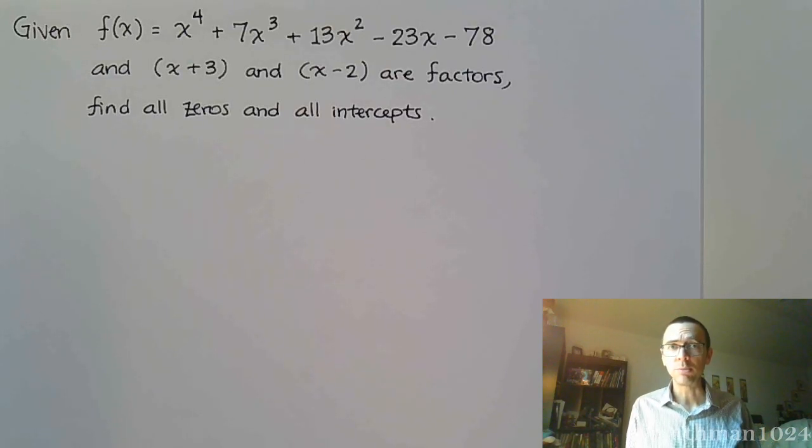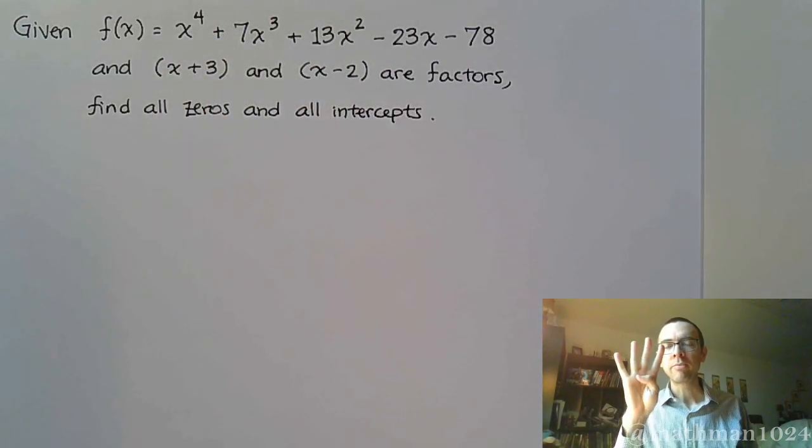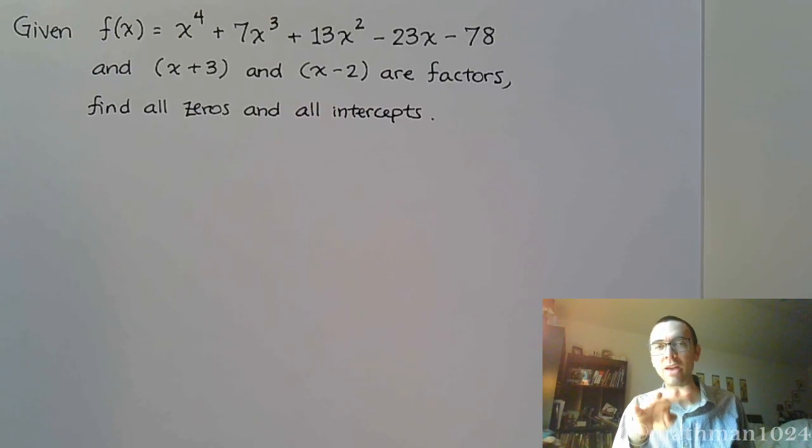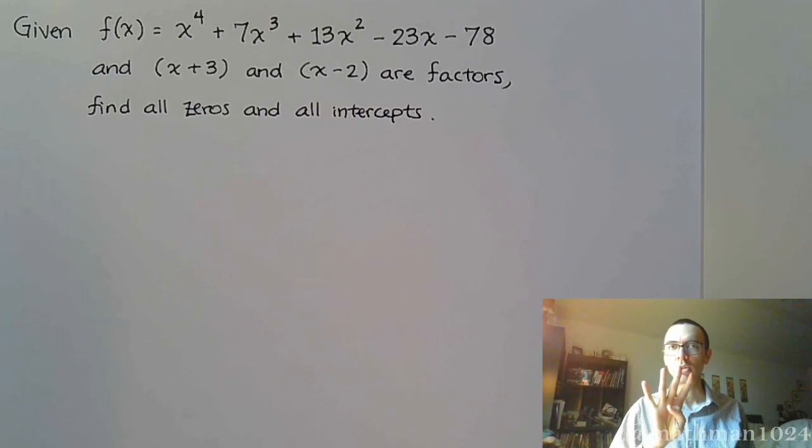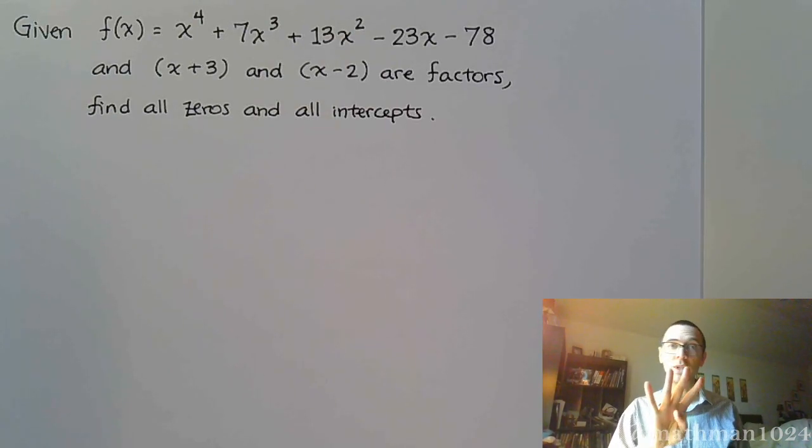All right, so here's another example of a polynomial function. Please note that this is a polynomial of degree 4. Since it's of degree 4, that means we can have at most 4 solutions. We're going to have 4 zeros. That's a guarantee.